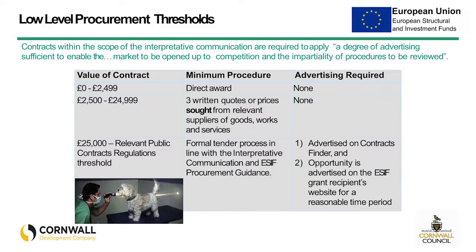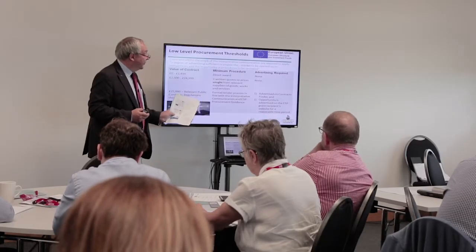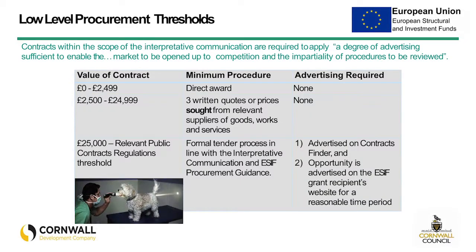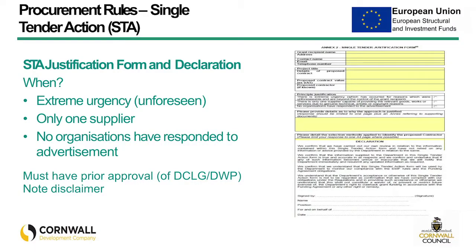Above £25,000, we're into national rules — a formal tender process in line with the interpretive communication and the guidance. That's what we're going to go through when I run through the six stages of procurement. Transparency is very important — there must be a transparent process. All of the documentation, the specification, et cetera, must be made available to those you're inviting to bid or those responding to an advertisement.